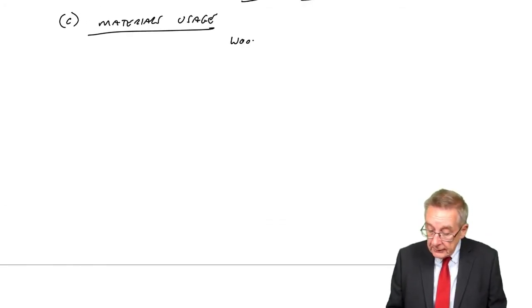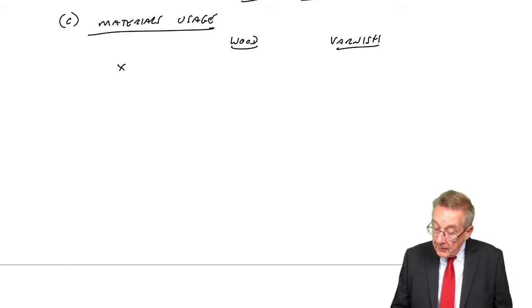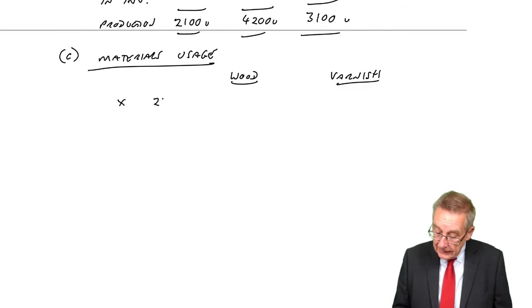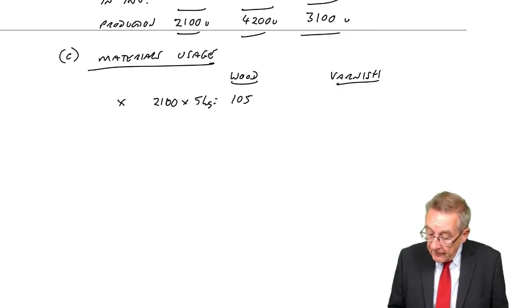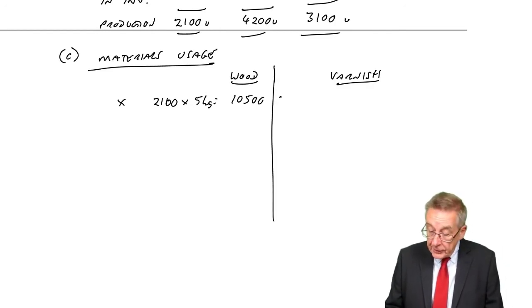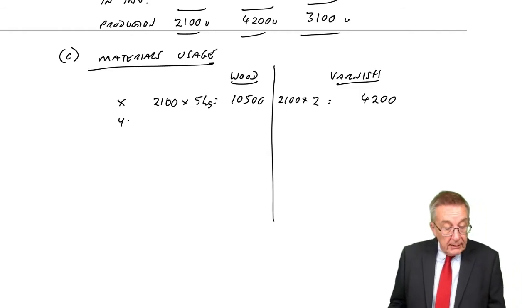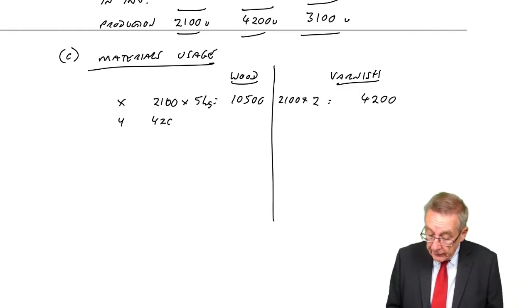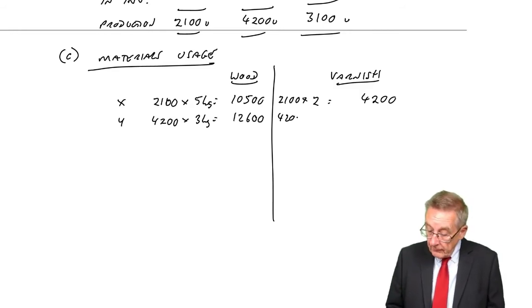Let me do them side by side: materials of wood and varnish. Product X: how many are we producing? 2,100. How much wood does it use? Each unit uses 5 kilos, so we'll need 10,500 kilos of wood. Varnish? 2,100 units, each unit uses 2 litres of varnish, so 4,200 in total. Y: we're producing 4,200. Each Y uses 3 kilos of wood, which is 12,600 in total. Each Y uses 2 litres of varnish, 8,400 in total.